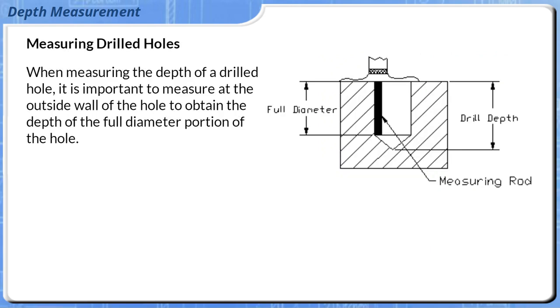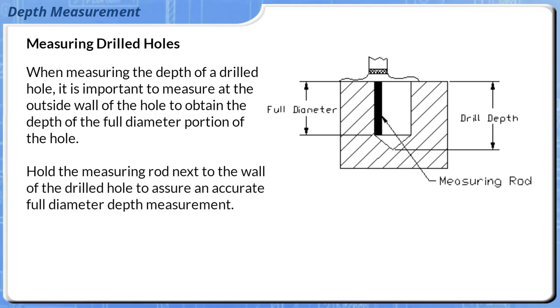When measuring the depth of a drilled hole, it is important to measure at the outside wall of the hole to obtain the depth of the full diameter portion of the hole. Hold the measuring rod next to the wall of the drilled hole to assure an accurate full diameter depth measurement.